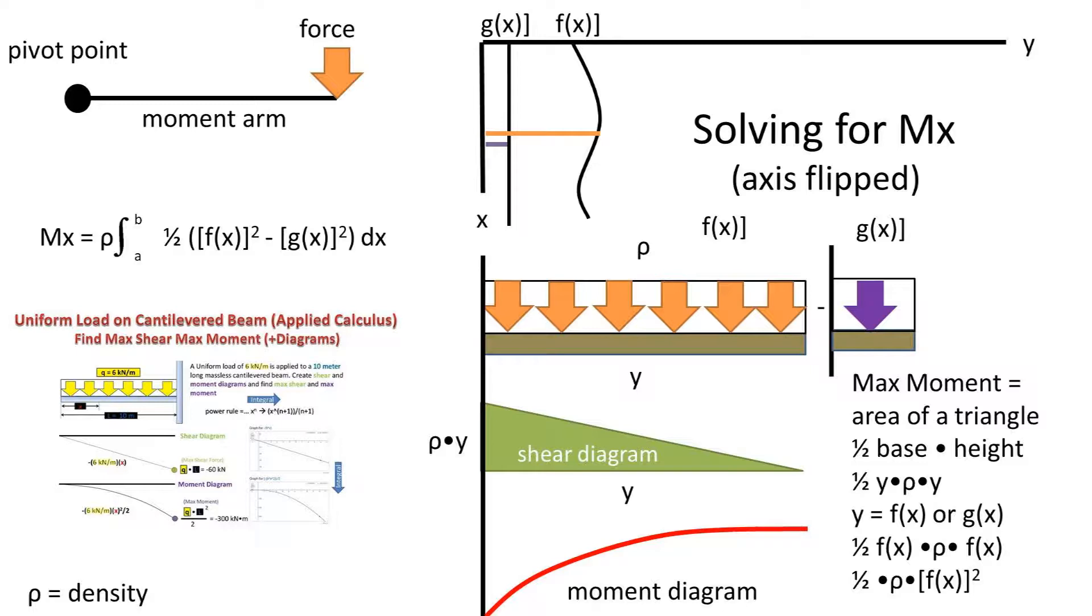So our formula is the moment about the x-axis is equal to the density times the integral from point b to point a for one-half f(x) squared minus g(x) squared with respect to dx.